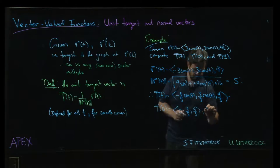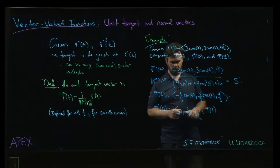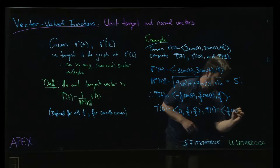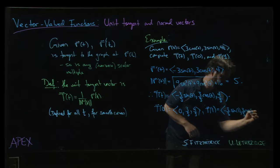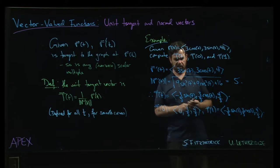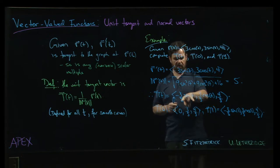And then at t of say 1, well ok the vector is not quite as nice but 3 over 5 cosine of 5 sin 1, 3 over 5 cosine of 1 and 4 over 5. And if we wanted to do t of pi over 2 maybe, then we would get minus 3 over 5 here, 0 there, 4 over 5.